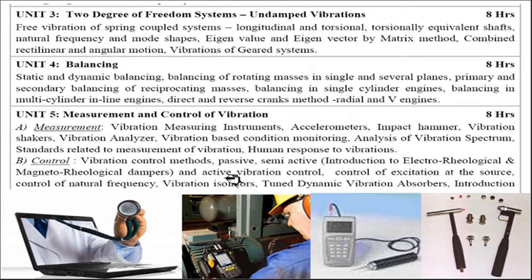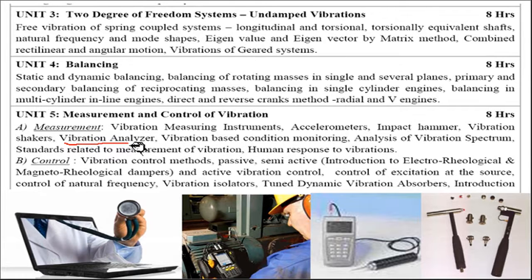Unit five covers measurement and control of vibrations. To control vibration we must first know the exact vibration levels in the system, so we use different instrumentation. Vibrations are generally measured using an accelerometer — a sensor — and an impact hammer to excite the system. A vibration analyzer called an FFT (Fast Fourier Transform) analyzer is used, and once the vibration level is known, appropriate control methods can be applied.